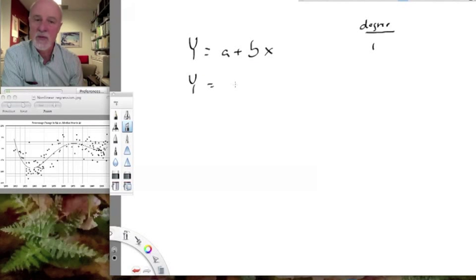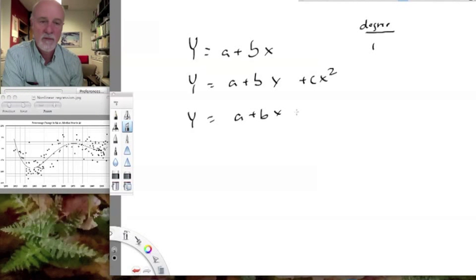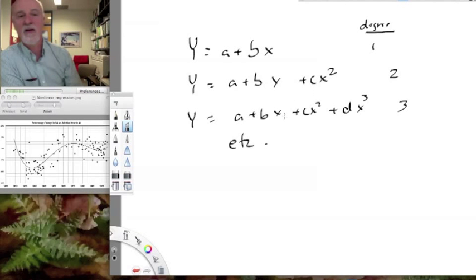But we can have a second-order polynomial by adding an x-squared term. We can have a third-order polynomial by adding an x-cubed term. We could have very much higher-order polynomials, and we would see different shapes of relationships between x and y that are possible.